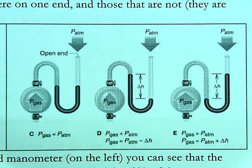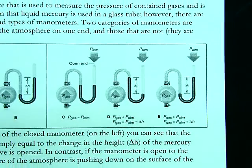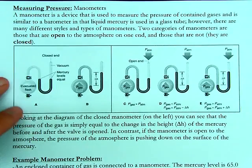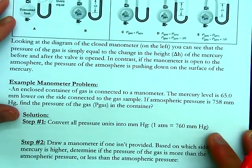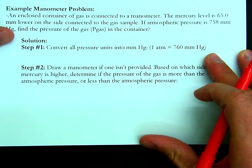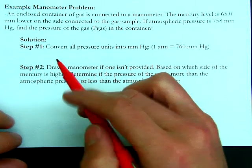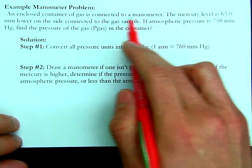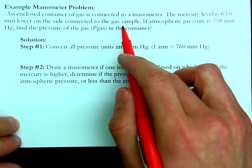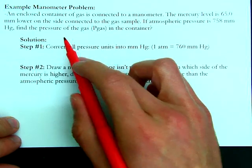Let's do some example problems. A container of gas is connected to a manometer. The mercury level is 65 millimeters lower on the side connected to the gas sample. If the atmospheric pressure is 758 mmHg, find the pressure of the gas.